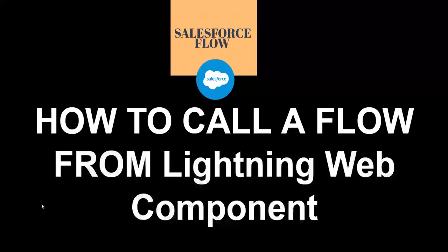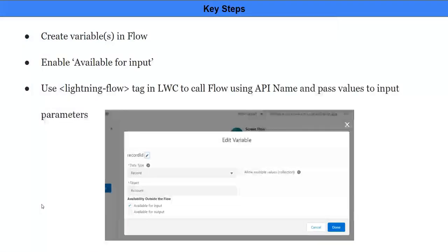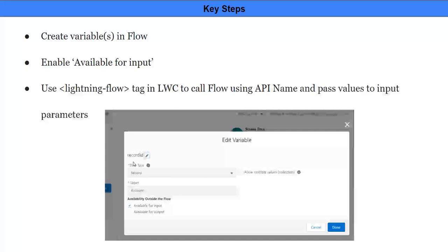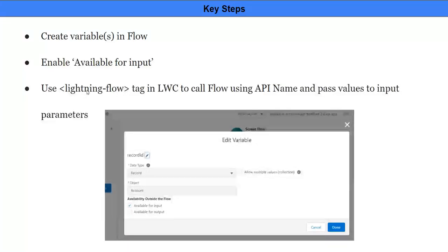So let's see the key steps. First, we're going to create a flow and create variables in it. Most importantly, we want to mark those variables as available for input, so the component can send required inputs to the flow. Also, Salesforce has provided a base component tag called lightning-flow which can be used in lightning web component code to invoke a flow. You need to know the API name of the flow and you can pass values to the input parameters.